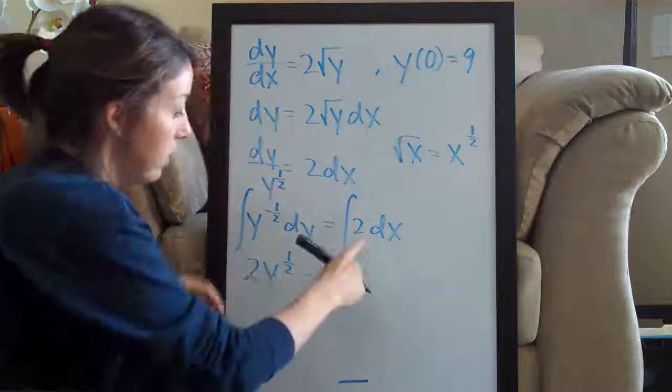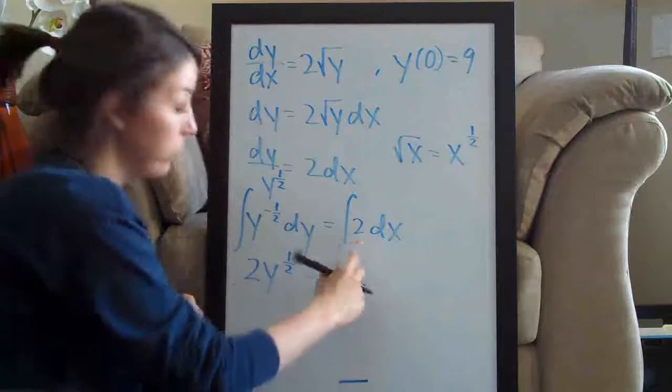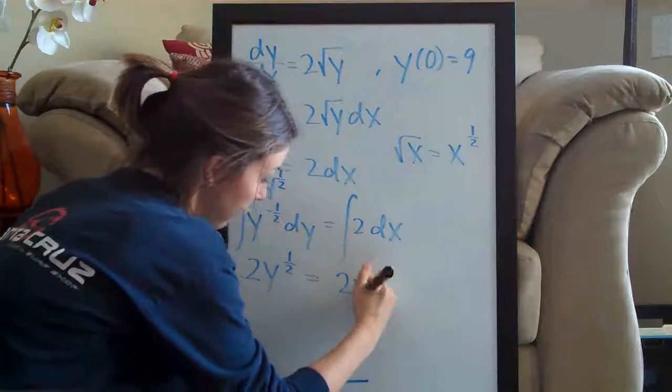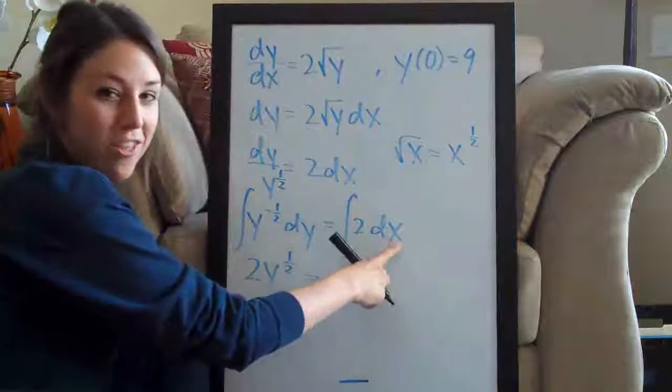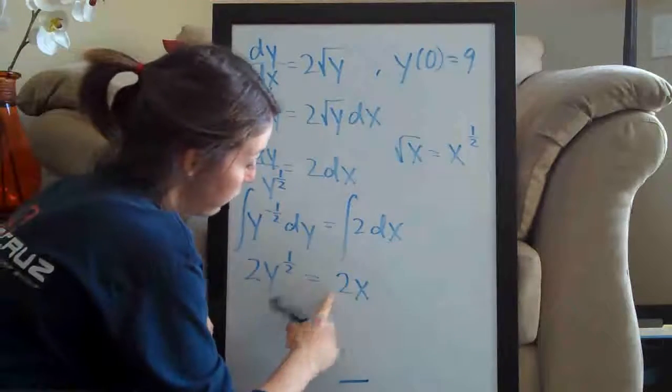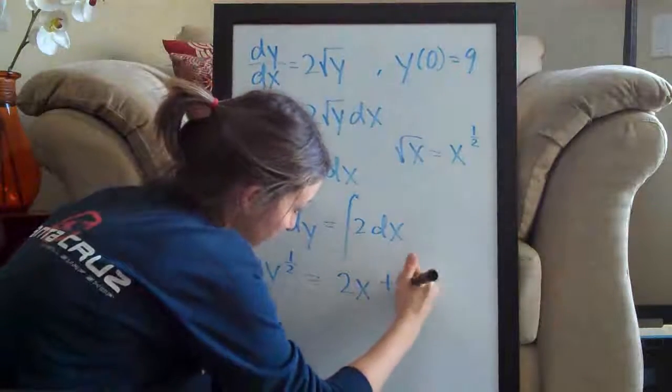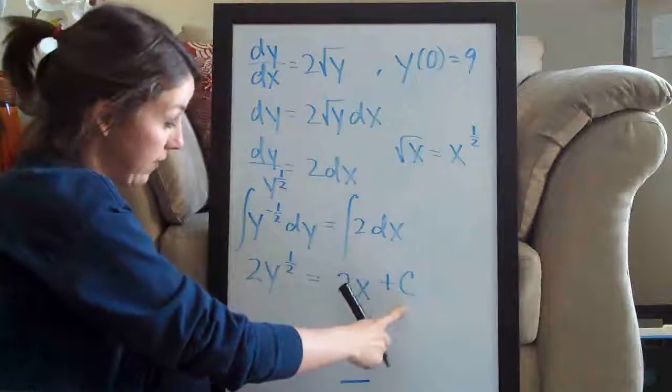We set that equal. The integral of two is 2x, and it's x because we have x's on this side. So we have 2x and then of course we always add C to the right side of the equation with x's.